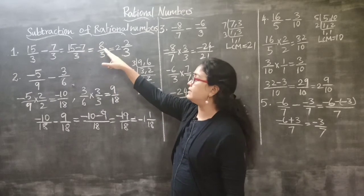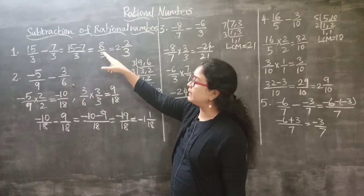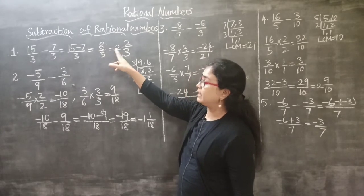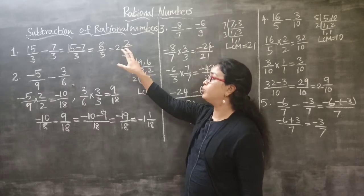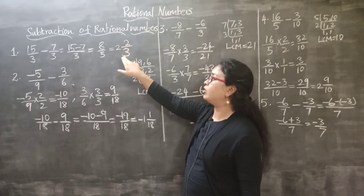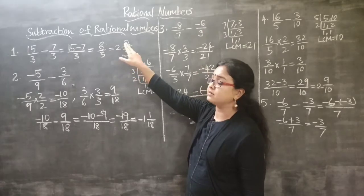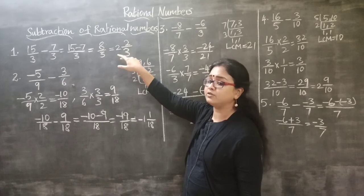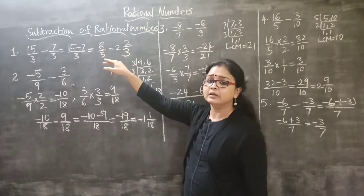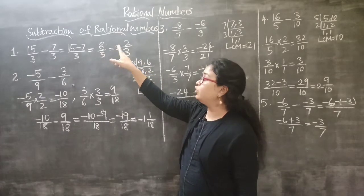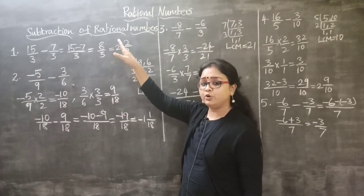8 by 3 we are converting into mixed fraction: 2 and 2 by 3, because 3 twos are 6, and 6 plus 2 is 8, which is also 8 by 3. So we got the same answer. To understand how to do this mixed fraction conversion, you can watch my addition of rational numbers videos.